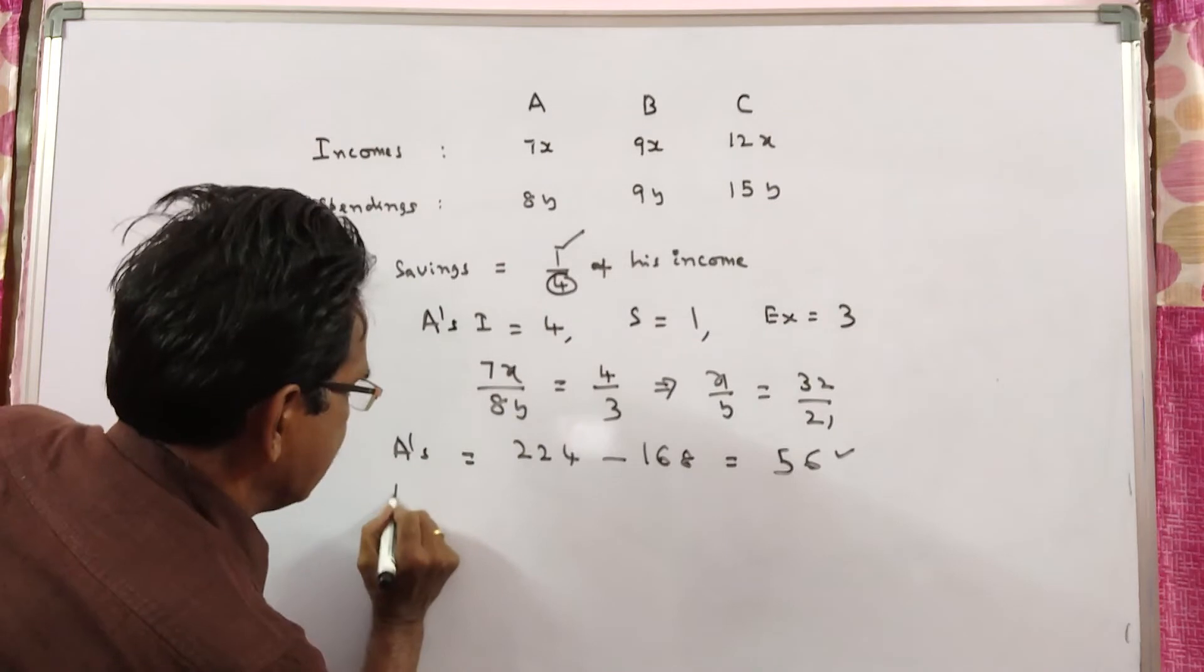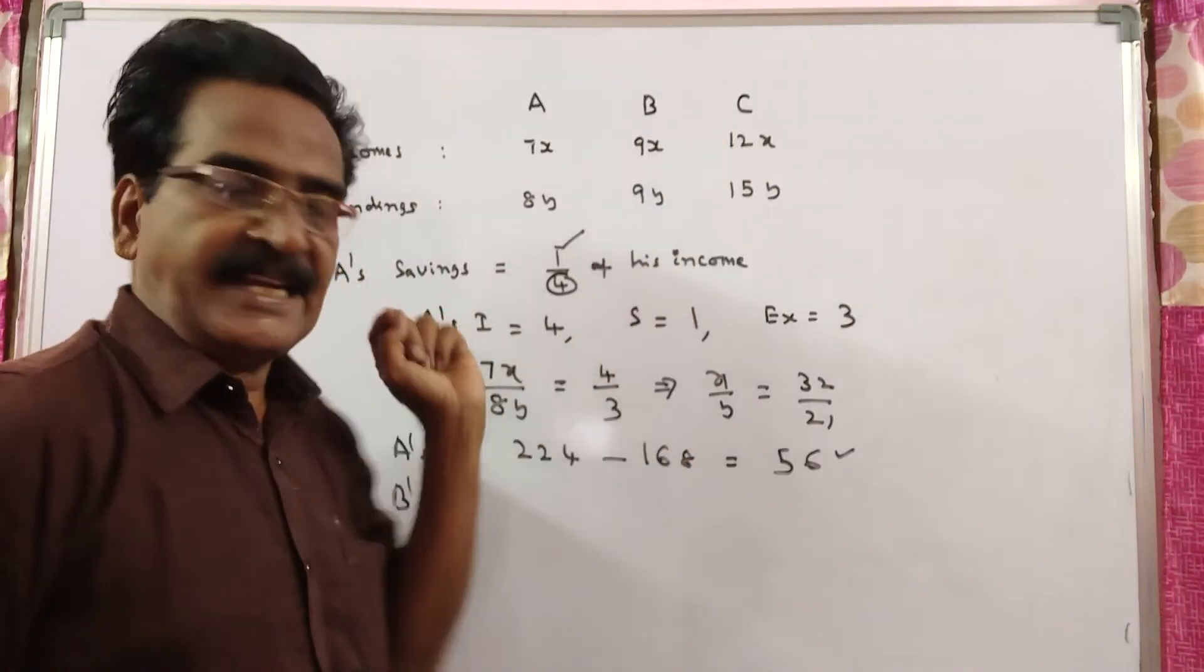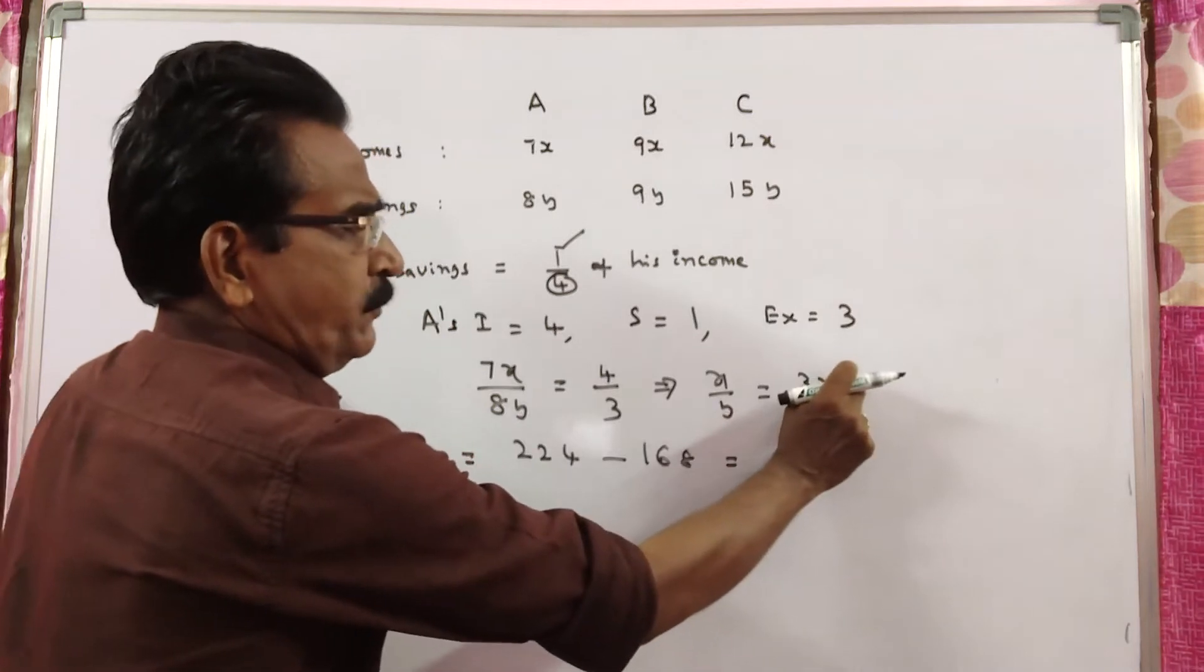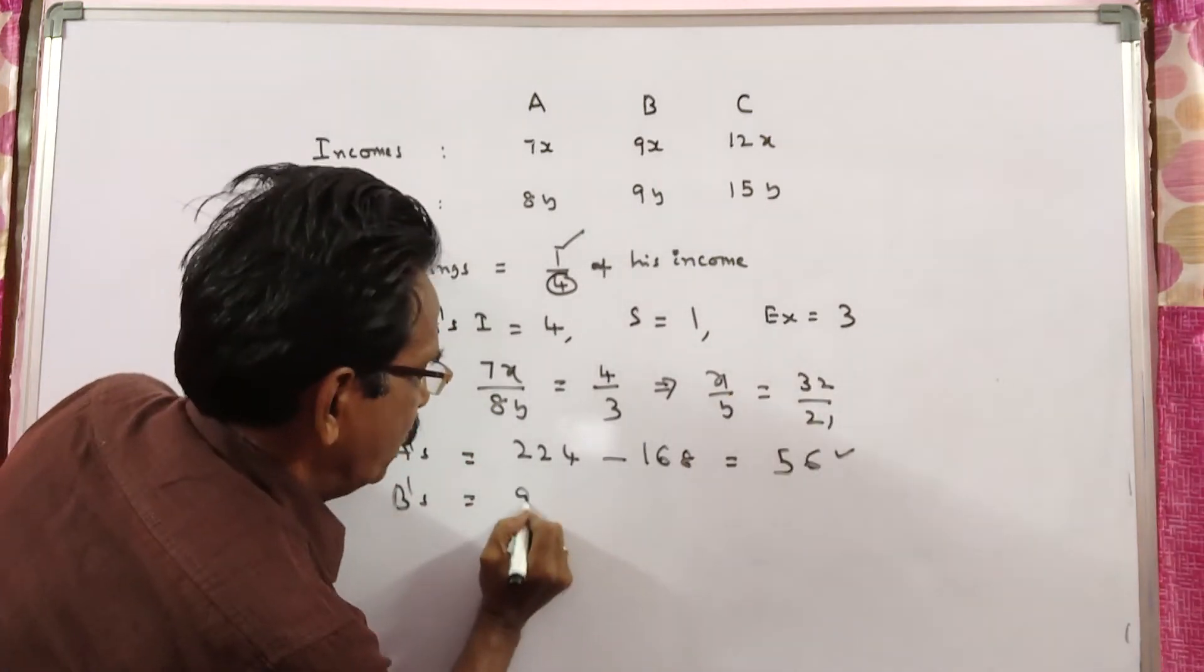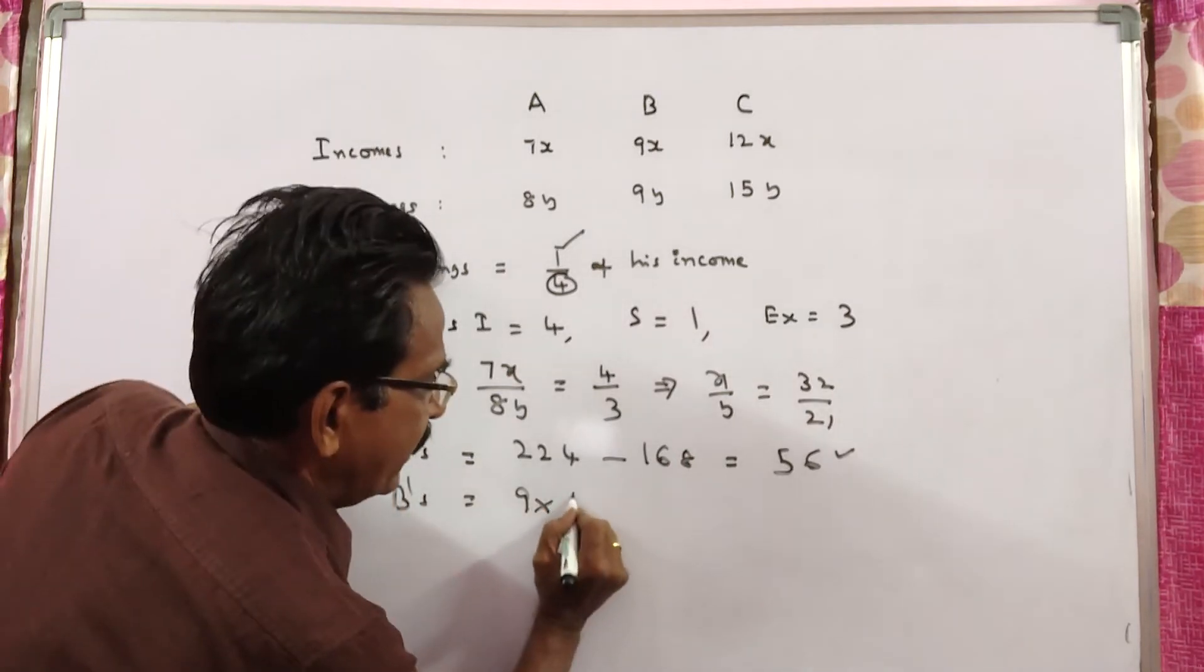Now let us come to B's savings. 9x minus 9y, 9 times (x minus y), 9 times (32 minus 21), 11, 9 times 11, 99. This is the savings of B.